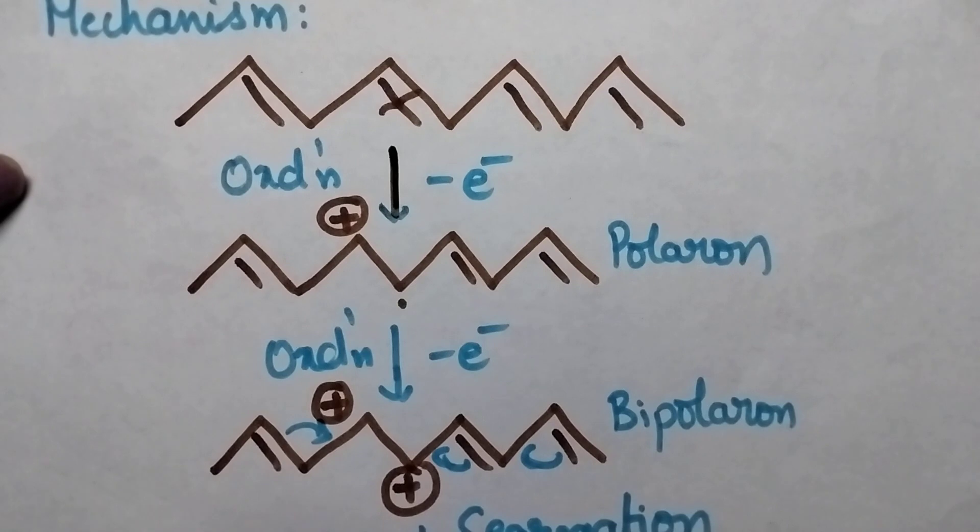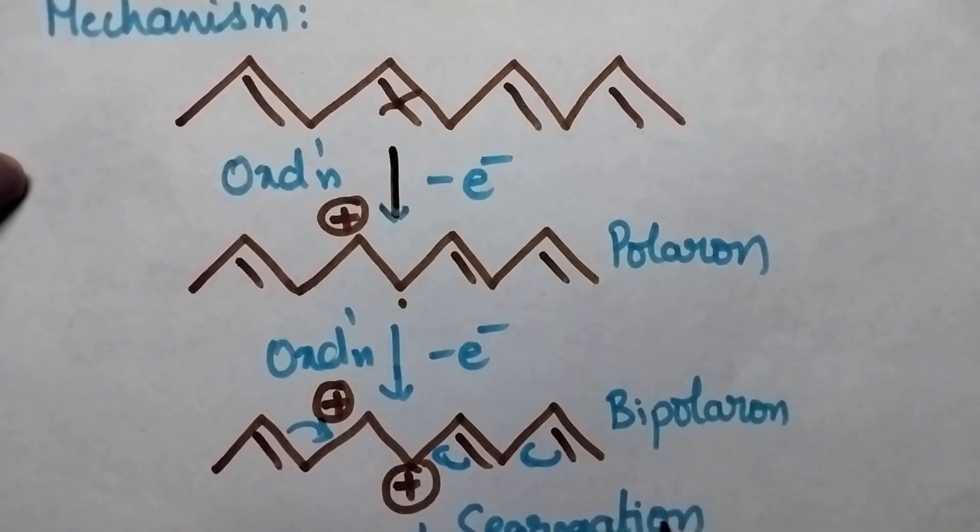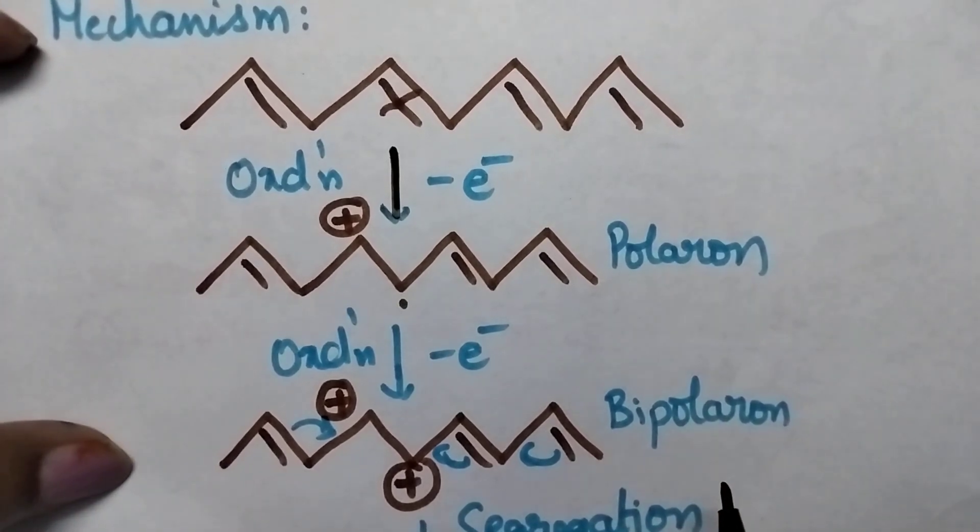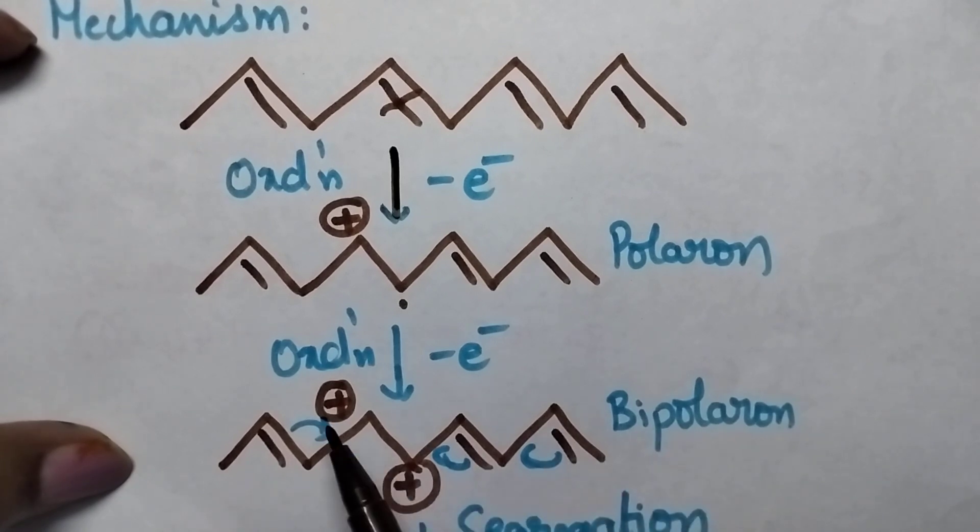With the result, in order to get a stable structure, it undergoes segregation. Segregation means dispersal of the charge. Charge dispersal takes place.